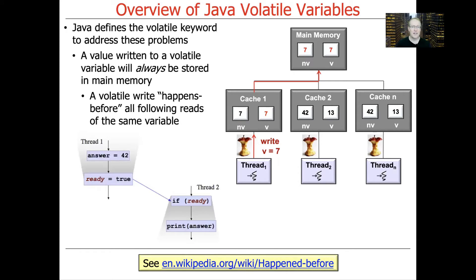This induces something called a happens-before relationship. For right now, all it means is: if you write something to a volatile variable, that will happen before all subsequent reads of the same variable — another way of saying the value will be consistent for all threads that read immediately after that value is written.